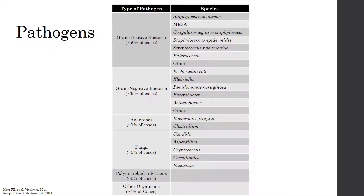The table here lists common pathogens that cause infection leading to sepsis. Gram-positive bacteria are the most common cause, resulting in roughly 50% of cases. Common gram-positives include Staph aureus, MRSA, Strep pneumo, and enterococcus. Gram-negative bacteria are the second most common cause, resulting in about 35% of cases, and include E. coli, Klebsiella, Pseudomonas, and Enterobacter. The remaining pathogens include anaerobes, fungi, polymicrobial infections, and other organisms. It is important to recognize that this is not an all-inclusive list — the site of infection and the usual organisms found at that site are the main determinants of the type of pathogens causing the possible sepsis.